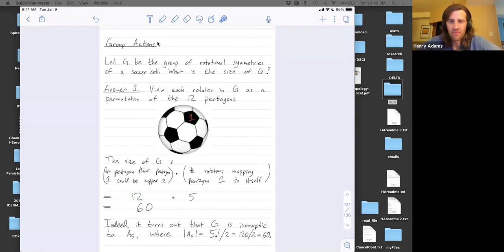All right. So in our next class, we'll state the orbit stabilizer theorem precisely, but that's what we're using here to count these groups of symmetries for the soccer ball example and in the prior videos for the cube examples. Any public questions? Thanks so much.